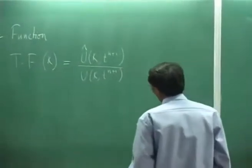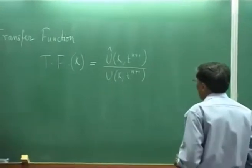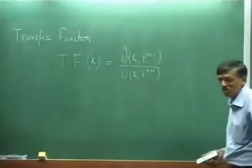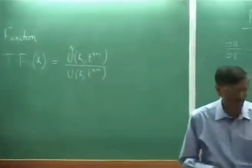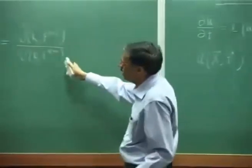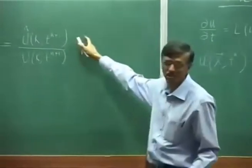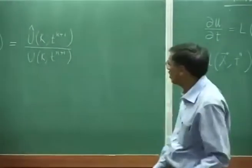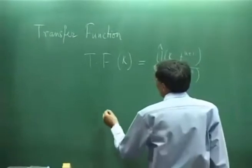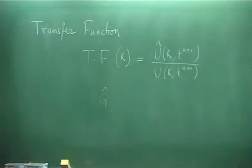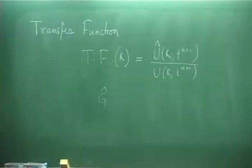Basically, the raw solution upon application of the numerical method is taken and convolved with the transfer function to get an acceptable solution — that is your numerator. So we can define g-hat, where g-hat is essentially the composite gain function or amplification factor.